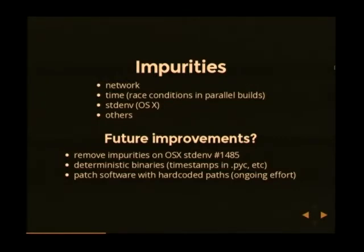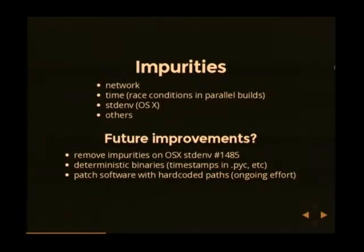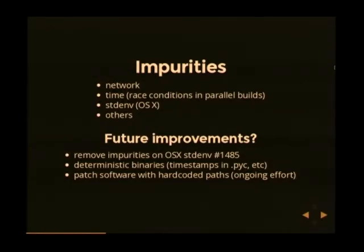There are also impurities. For example, many packages have tests that need network access — in those cases we just disable those tests, because there's no way to ensure the network result is deterministic. Sometimes parallel builds will fail because the source code needs to be fixed — that's also something Nix cannot fix. We have a concept of 'standard environment,' which is the minimal set of tools like GCC and GNU utilities that you always need when packaging software. On OS X, we use the OS X tools, as it's more convenient, and there's a ticket to improve this in the future.